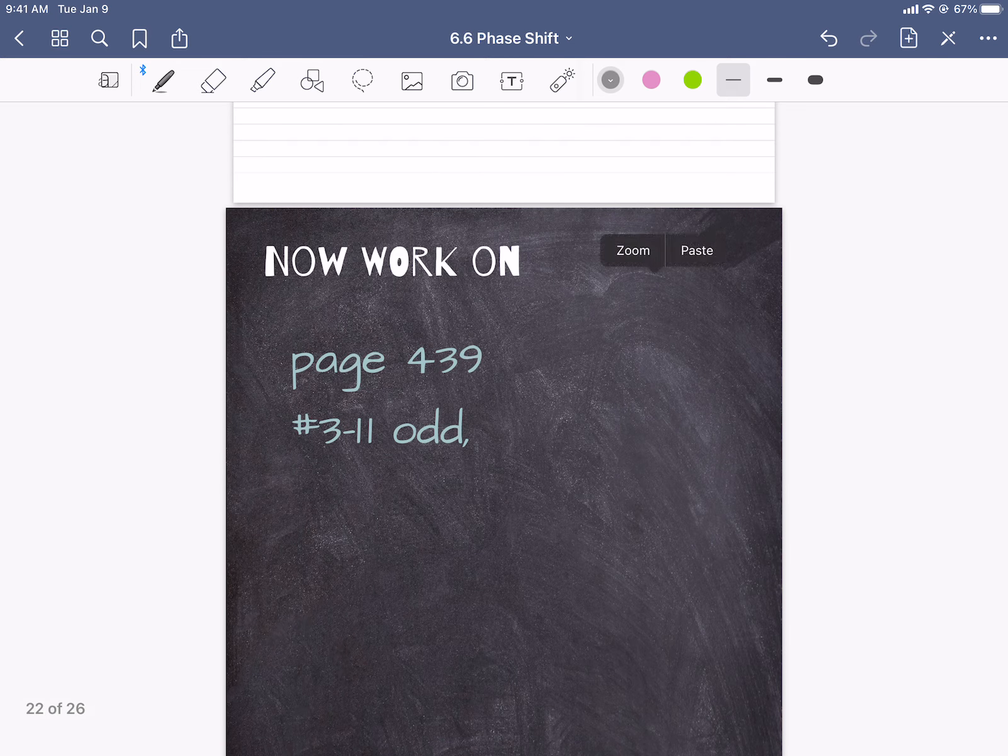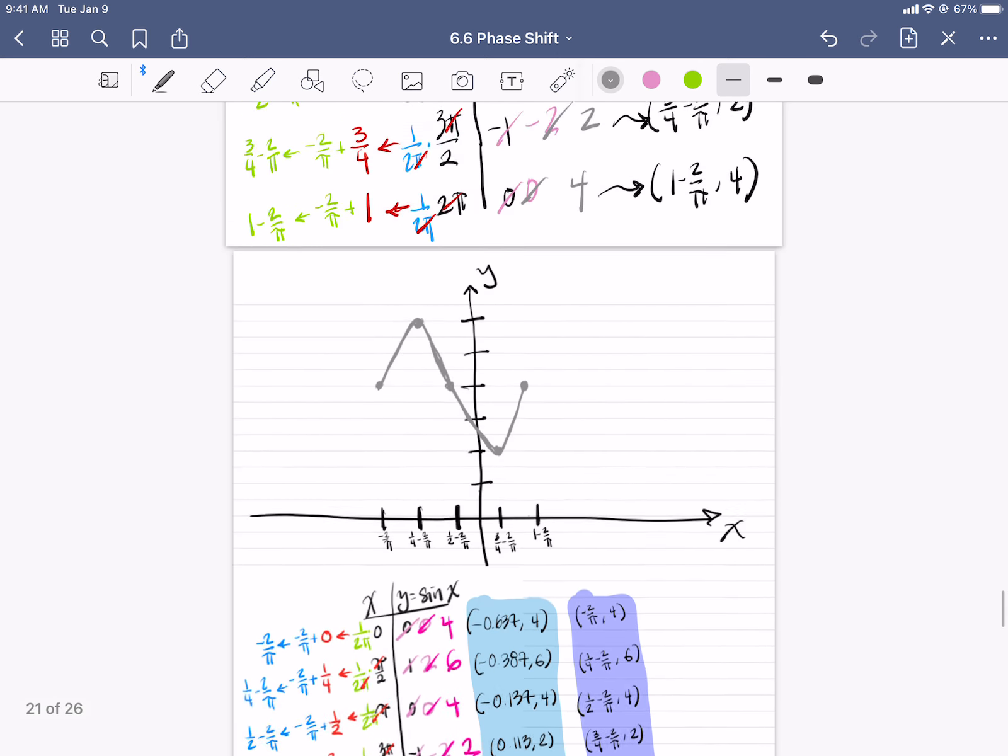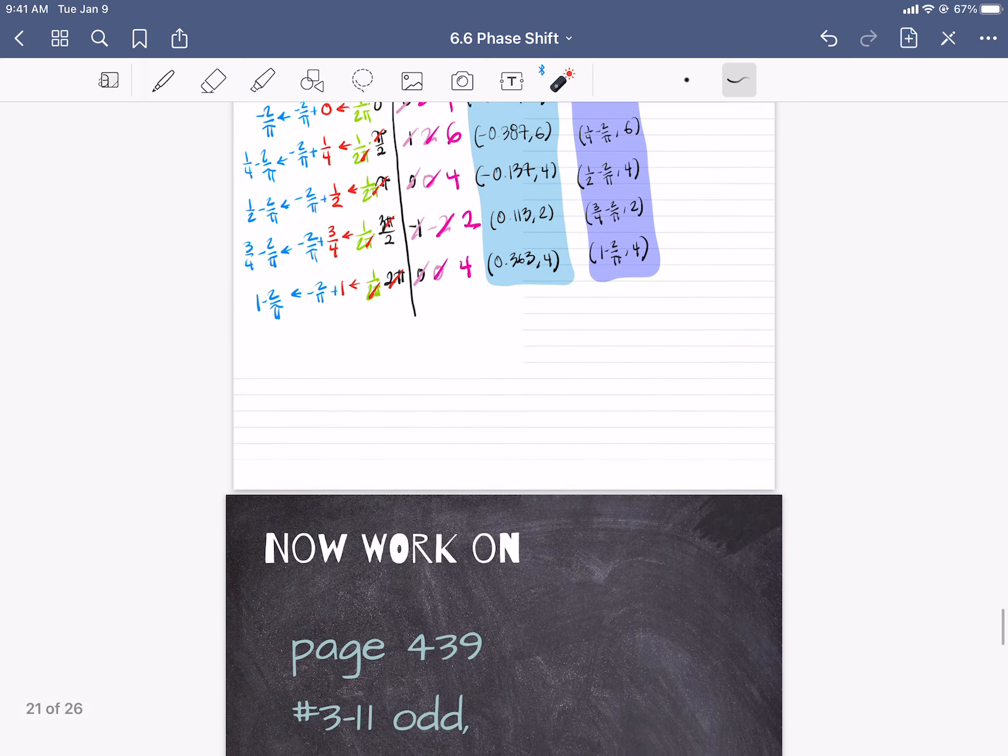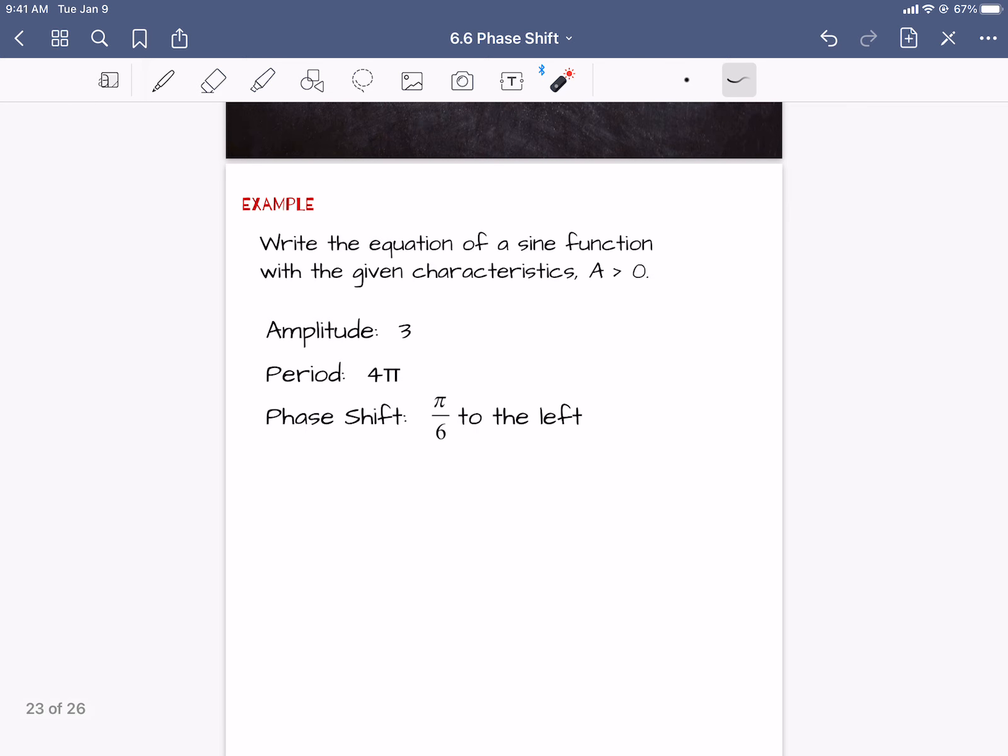The last example on this assignment was part of what I have already assigned, but it had one of these ugly guys in there. And it's only ugly when your coefficient of x has a π in it. That's what makes it ugly and messy. So this next one says, write an equation of the sine function with given characteristics where the amplitude is greater than zero. So we have a positive amplitude. So we want to use y equals a sin(bx - h) + k. The amplitude is 3, the phase shift is going to go π over 6 to the left.